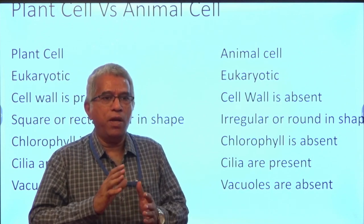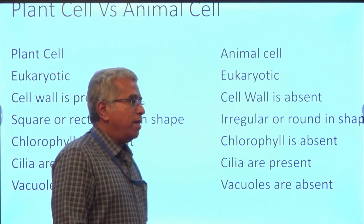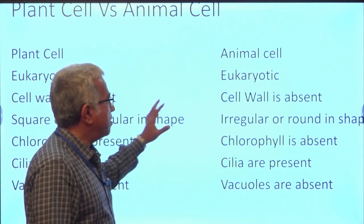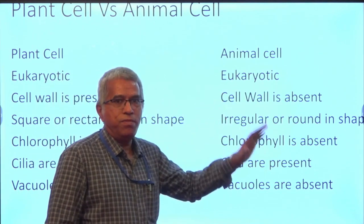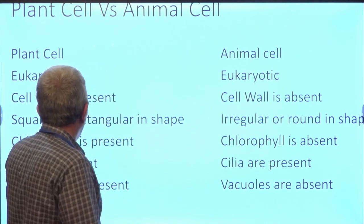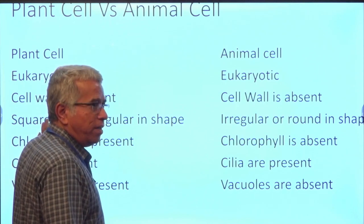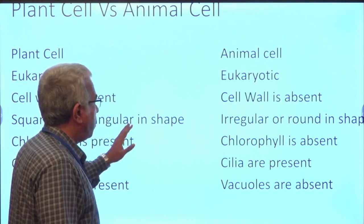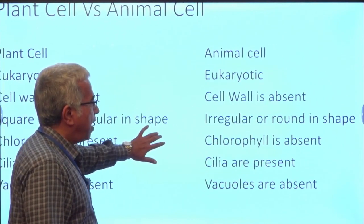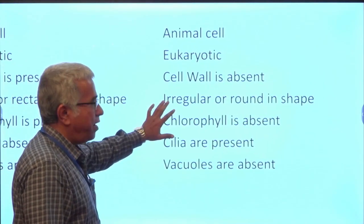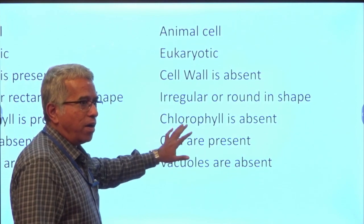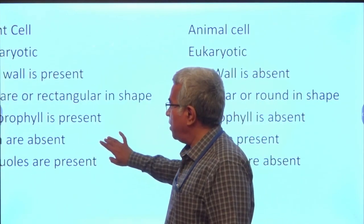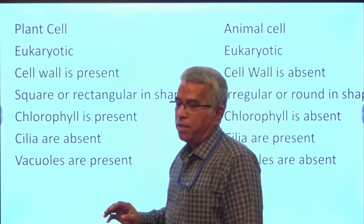Cell wall is present in the case of plants whereas the cell wall is absent in the case of animals. The plant cell is normally either square or rectangular in shape, whereas the animal cell is normally irregular or round in shape.